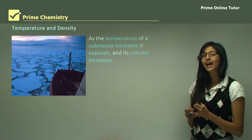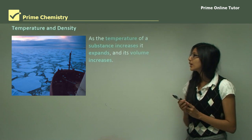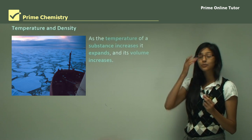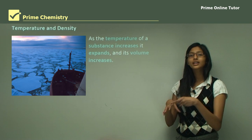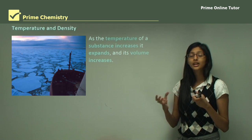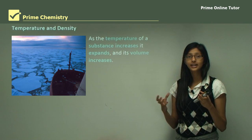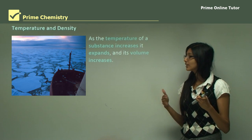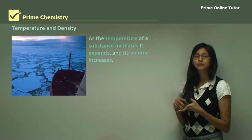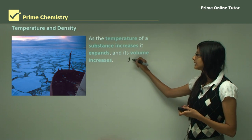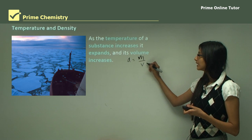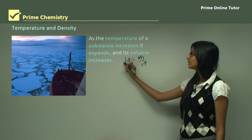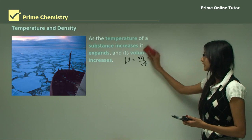Now let's look at how temperature and density relate to each other. As the temperature of a substance increases, it expands and therefore the volume increases. When you add more heat, the molecules of the substance start moving and vibrating a lot, and as a result they need more space, so the volume increases. Looking at the formula — density equals mass divided by volume — volume and density are inversely proportional, and therefore if volume increases, density should decrease.